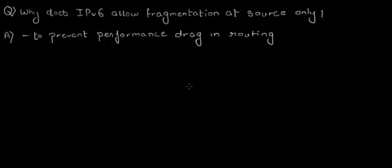Why does IPv6 allow fragmentation at source only? A one line answer to this question is to prevent performance drag in routing. Let's take a look at this in a little more detail.